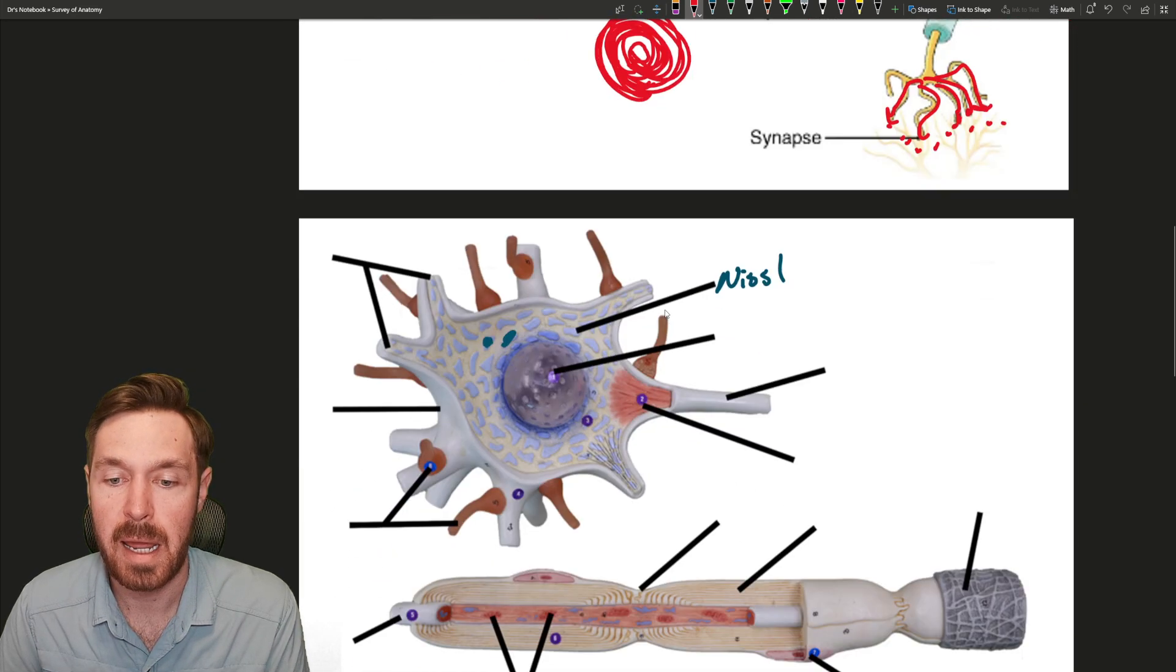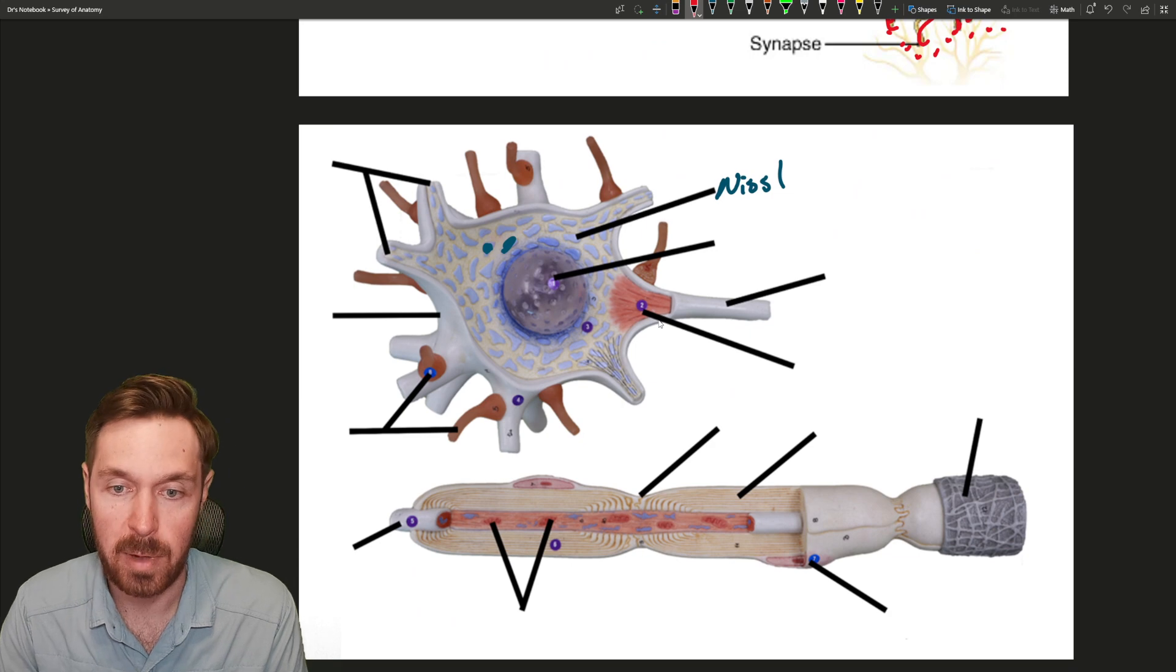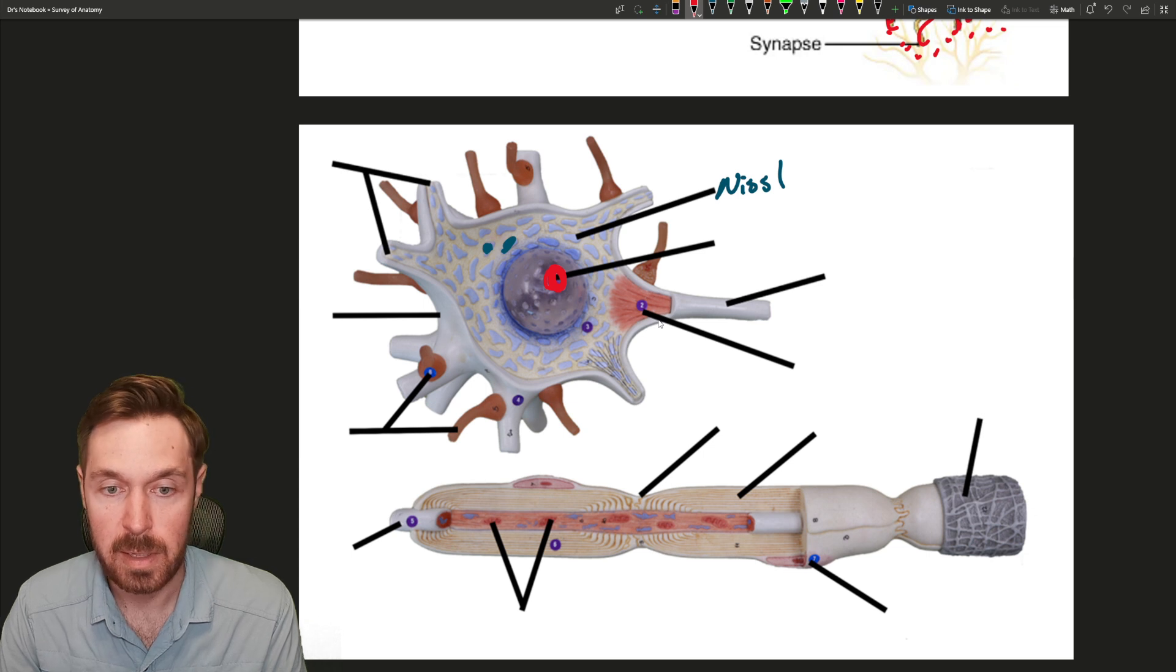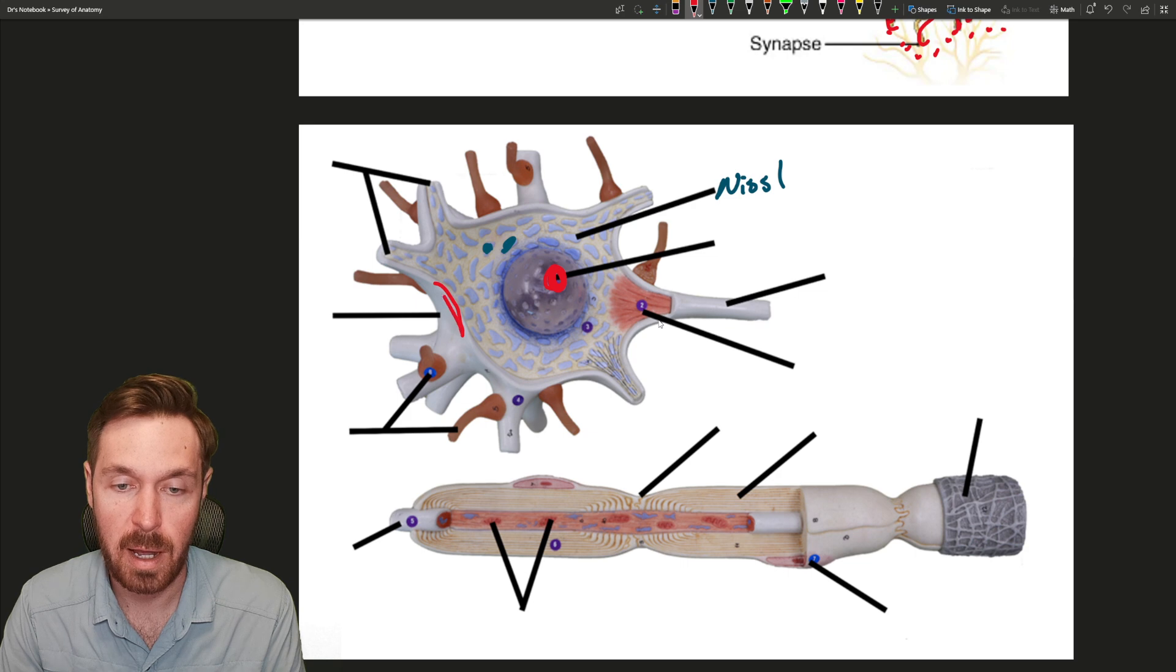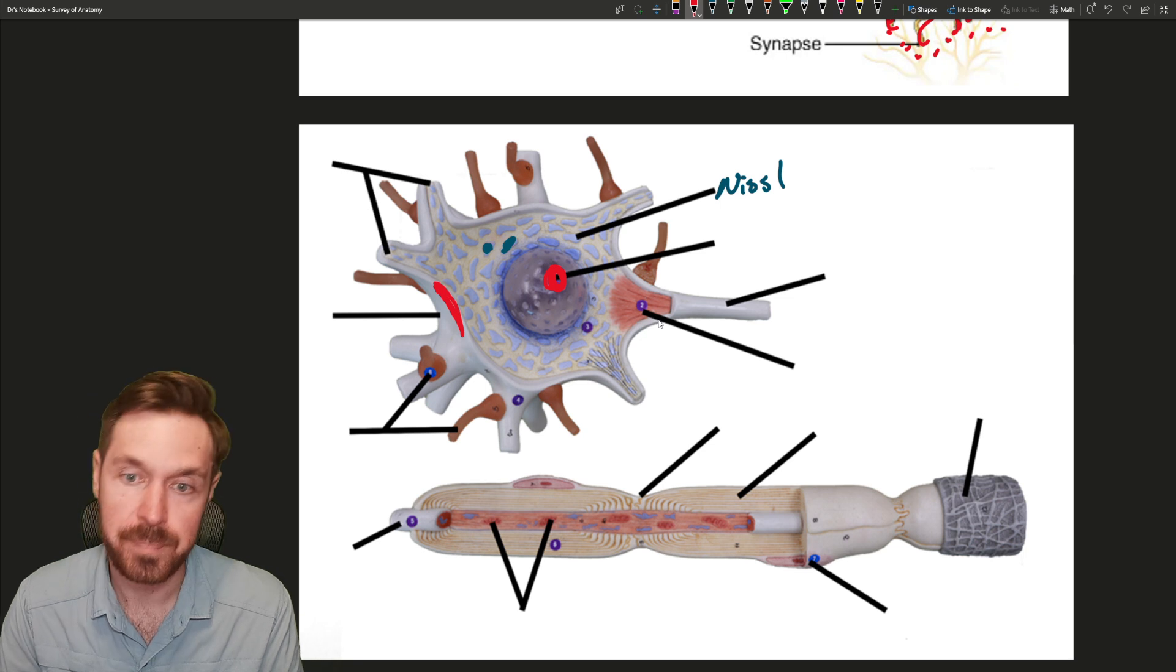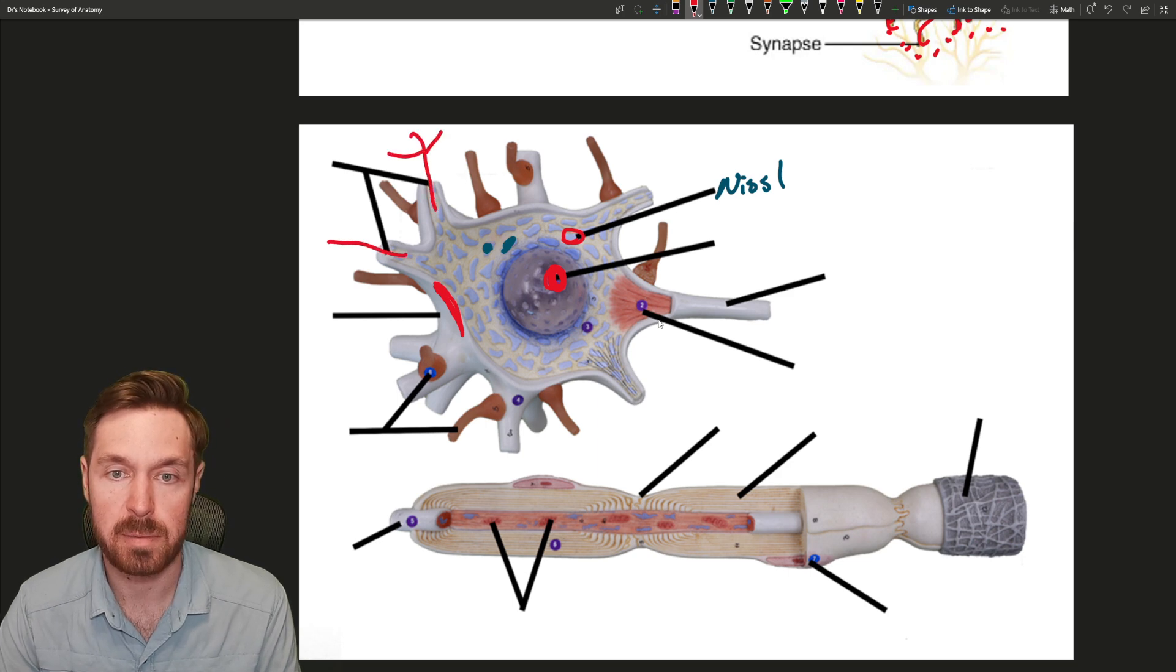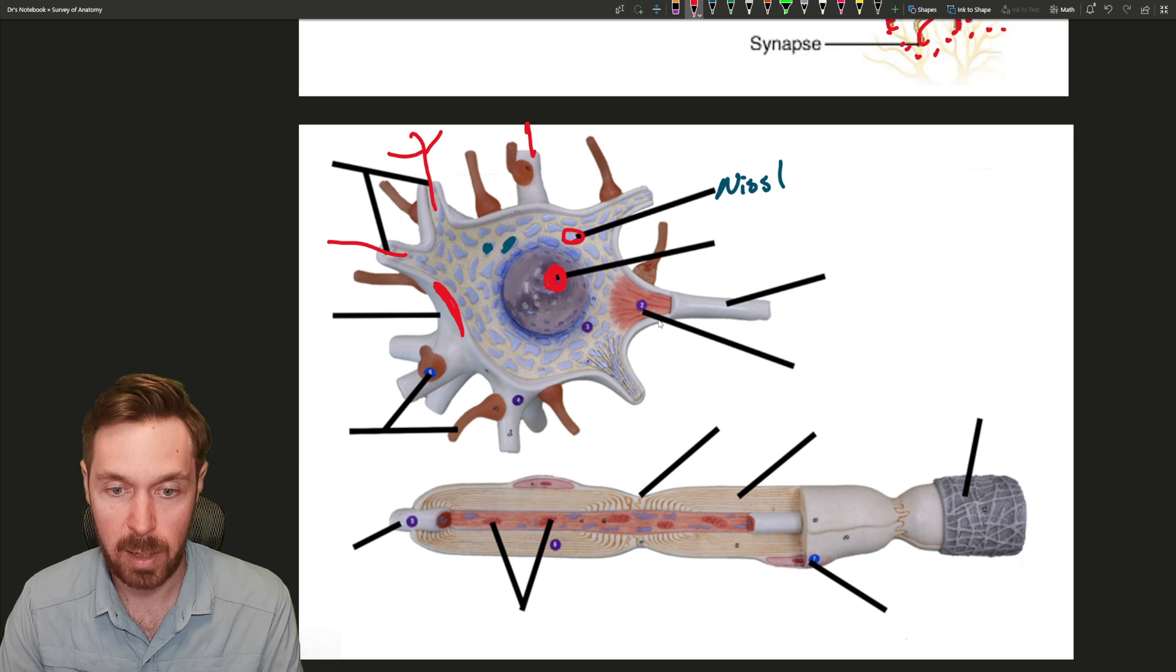We can also see those purple stains down here as well in this neuron, so those would be the Nissl bodies or the chromatophilic substance. That's the textbook representation of a neuron. Down here we have an actual lab model that I took an image of. Again, we have the nucleus right here. That would be where the cell body is. Here would be the cell membrane of it, sometimes referred to as the neurolemma. And then again here is that chromatophilic substance or those Nissl bodies. Here would be the dendrites coming out; they could have multiple branches on them as well.